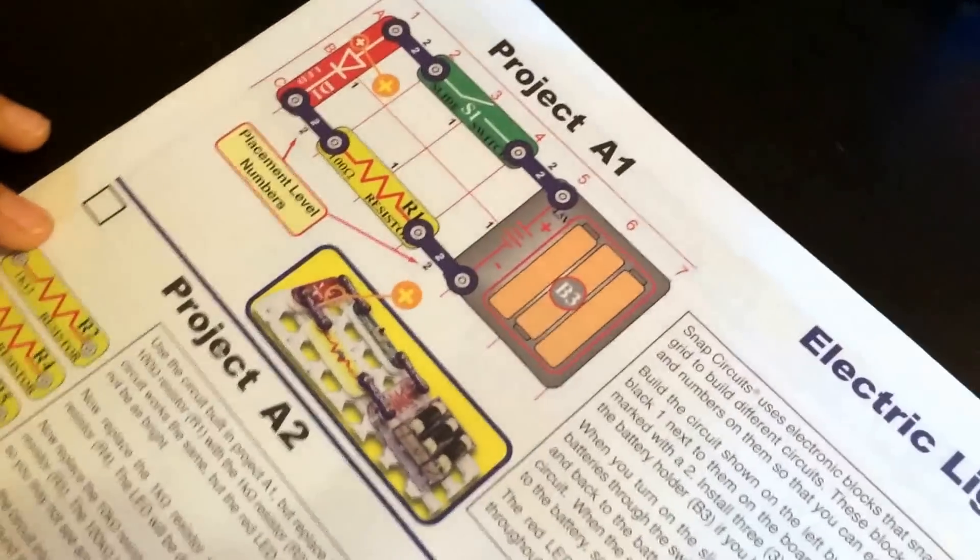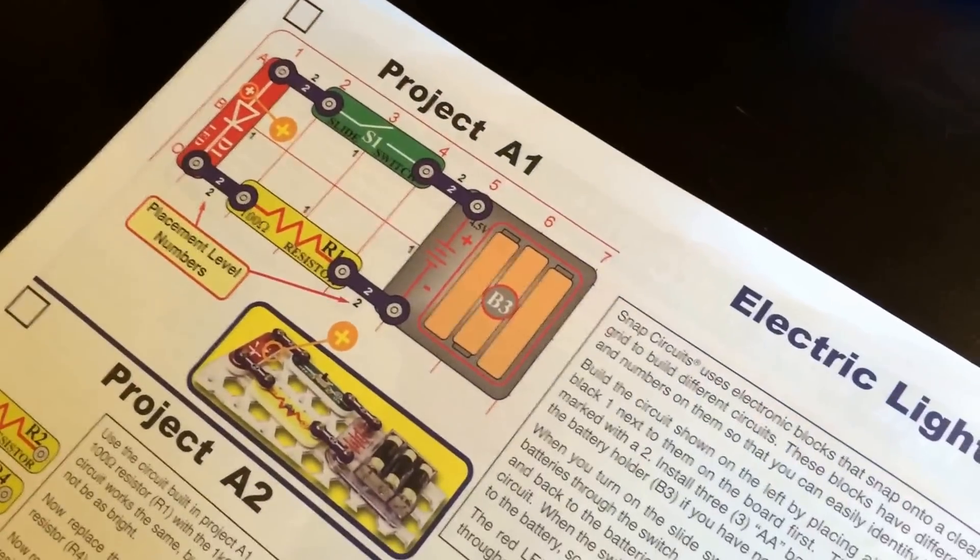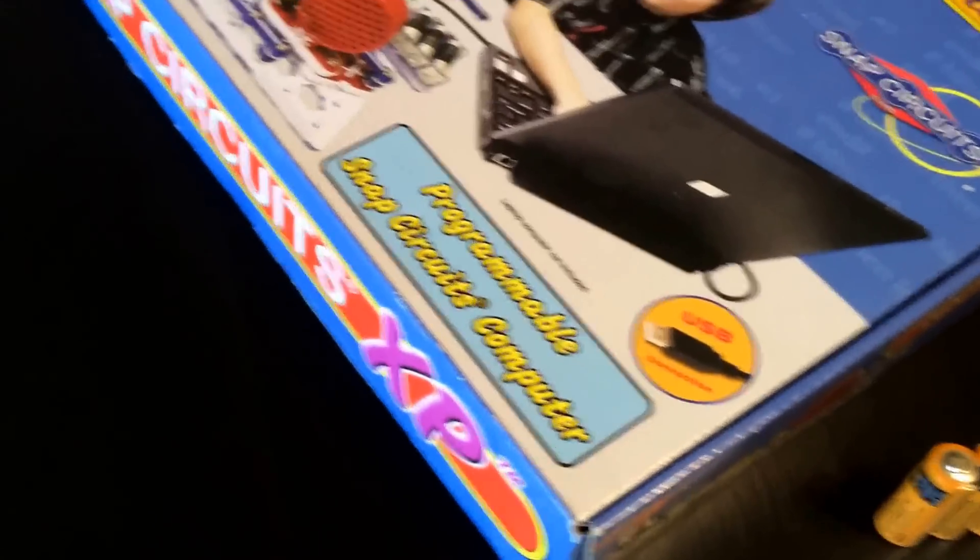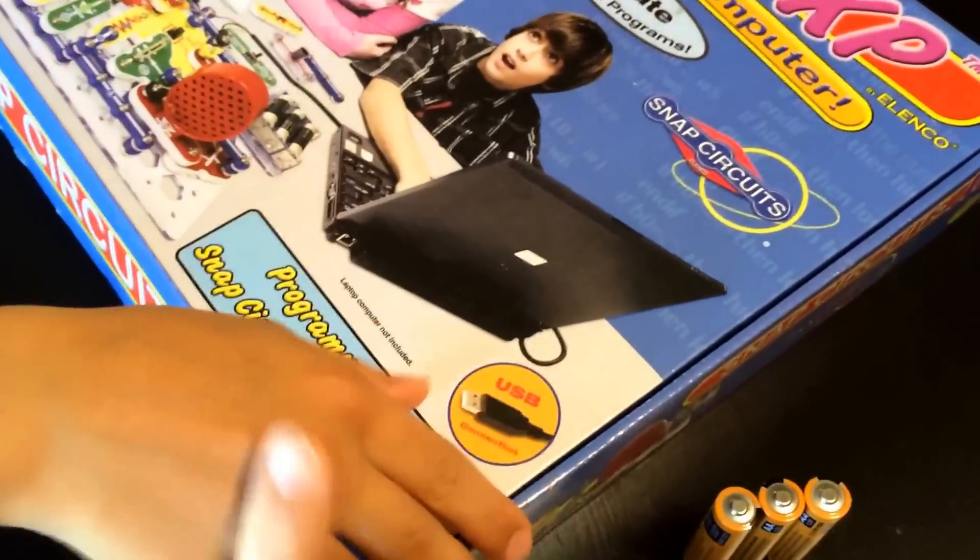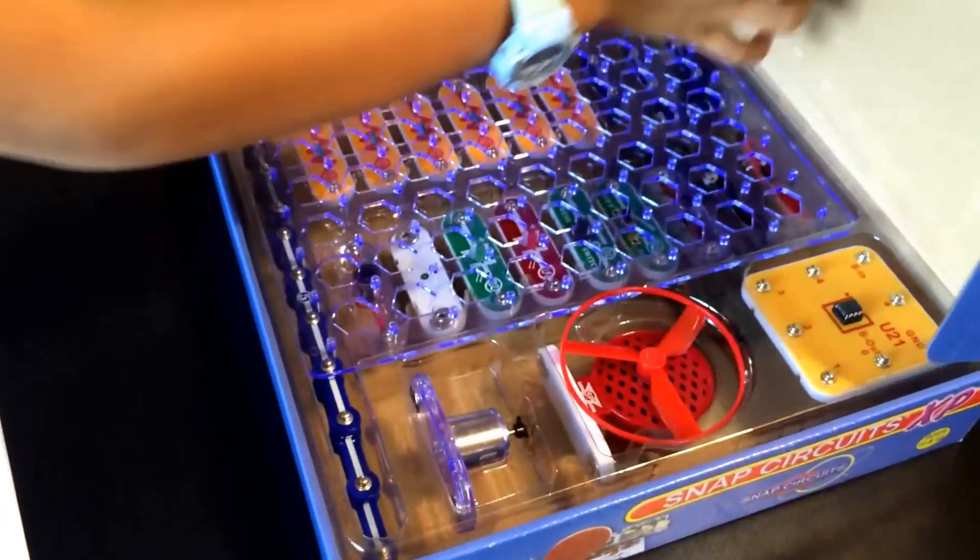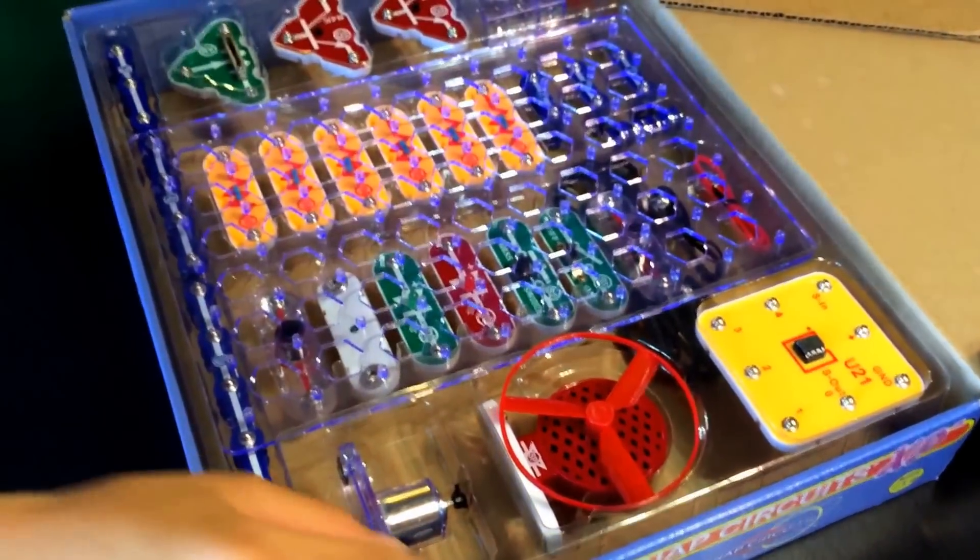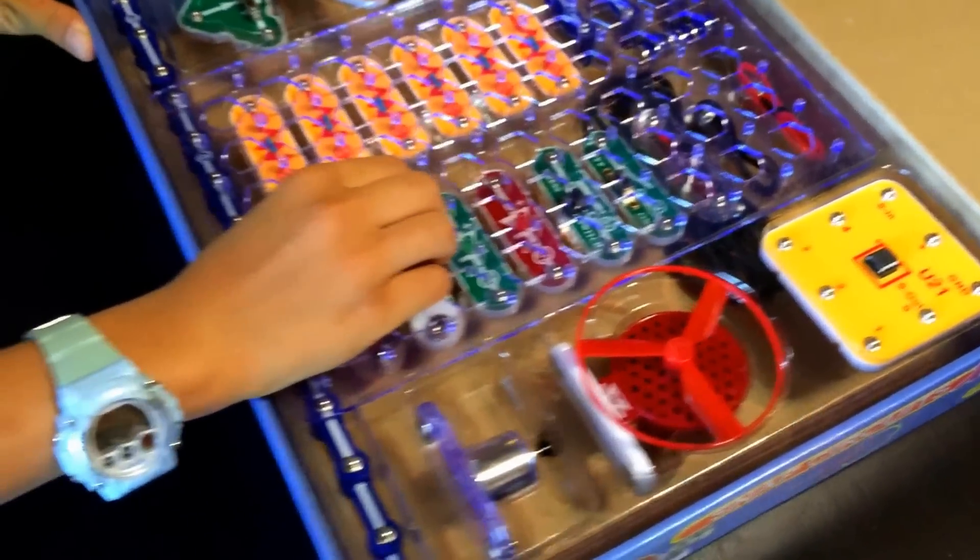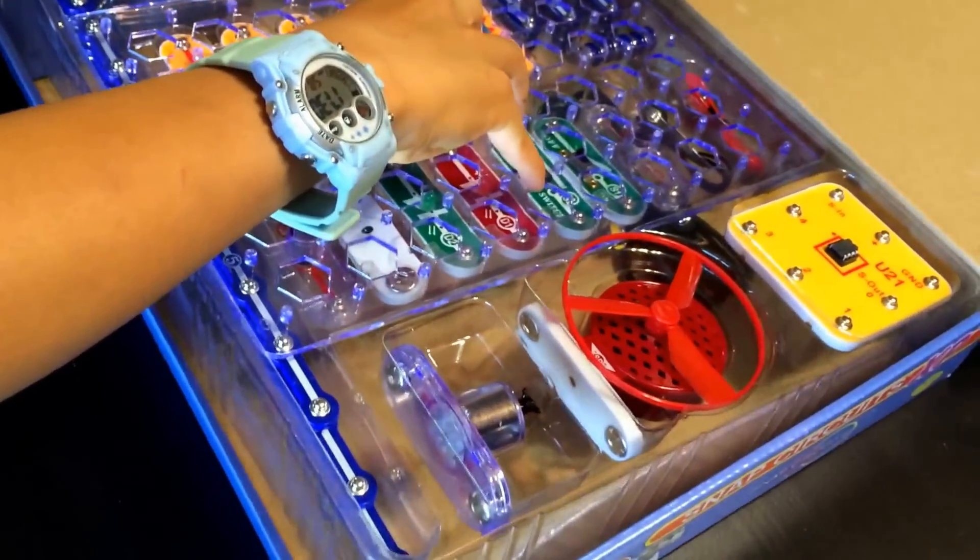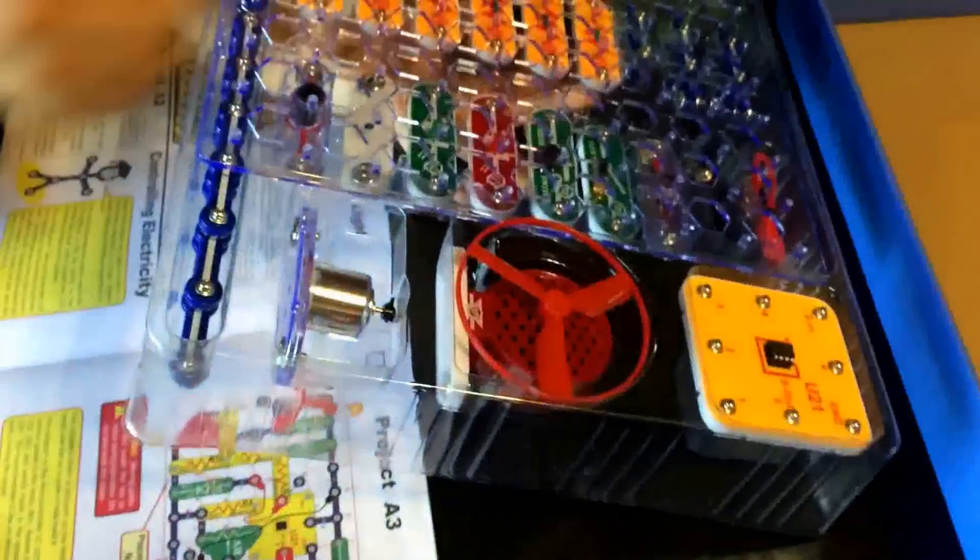So we're going to put together and do which project? Project A1, the electric light. Alright, and we need what's in here and we need batteries. So I think we're ready to go. Son, lead the way. We haven't opened this up, we haven't pulled out any circuits yet or anything. So what we do here today is going to be us opening this up and testing it out and seeing how user friendly it is for the first time.